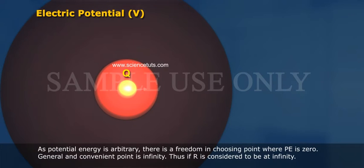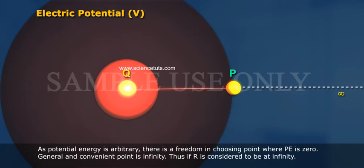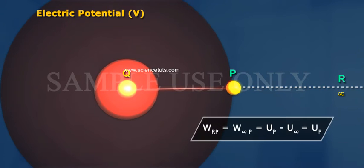As potential energy is arbitrary, there is a freedom in choosing point where PE is zero. General and convenient point is infinity. Thus, if R is considered to be at infinity, WRP is equal to W infinity P is equal to UP minus U infinity is equal to UP.